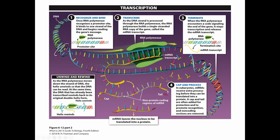We then have a single-stranded piece of RNA that needs a little editing before it can leave. We put a cap on the front and a poly-A tail on the end — to mark the beginning and protect the end. We can also remove sections called introns that don't code for anything, stitching together only the coding parts. Then we pump that mRNA out of the nucleus into the cytoplasm.